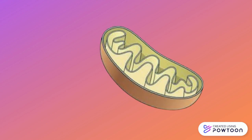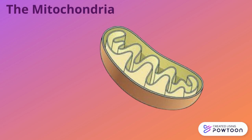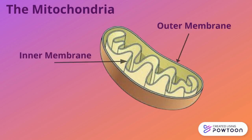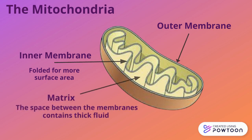The part of the cell that carries out cellular respiration is the mitochondria. It contains an outer membrane, an inner membrane which is folded for more surface area, and the matrix, the space between the membranes that contains thick fluid.